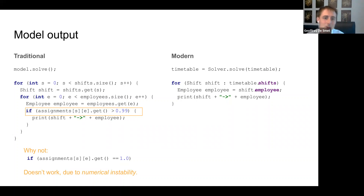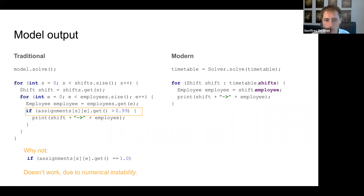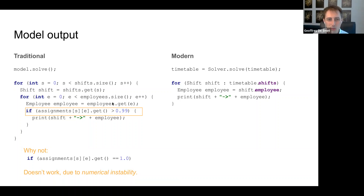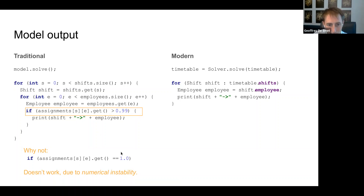They call this a leaky abstraction. Beneath the surface, linear programming translates the boolean into a continuous number and tries to make it end up at one or zero. You need to check against a threshold like 0.99. Most of the time values are clearly near one or near zero, but you still have to do it — and one reason is numerical instability.